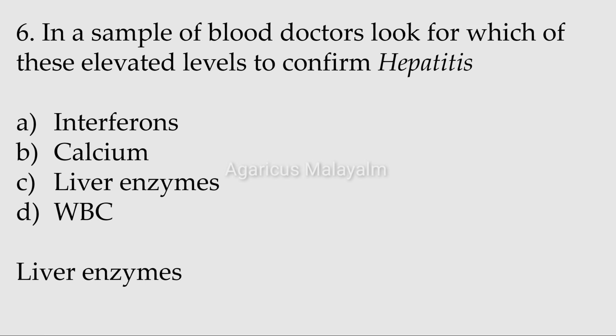Correct answer: option C, liver enzymes. Blood liver enzymes — alanine transaminase, aspartate transaminase — presence is checked. Syphilis is confirmed.